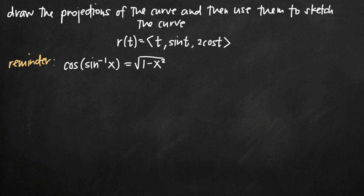Today we're going to be talking about how to draw the projections of a curve and then use those projections to sketch the curve. In this particular problem we've been given the vector equation r of t, where r is the vector and t is the parameter, so r is defined in terms of the parameter t. The vector equation is defined as (t, sine t, 2 cosine t), where each of these are the three components of our vector equation.